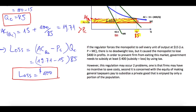The loss equals $400. So if the regulator forces the monopolist to sell every unit at $15 — price equal to marginal cost — there will be no deadweight loss for society, but the monopolist loses $400 in profits. To prevent the firm from exiting the market, the government needs to subsidize at least $400 using tax revenue. However, this creates two problems: the firm may have no incentive to save costs, and it raises concerns about equity — making general taxpayers, including non-users of the service, pay to subsidize a private good.